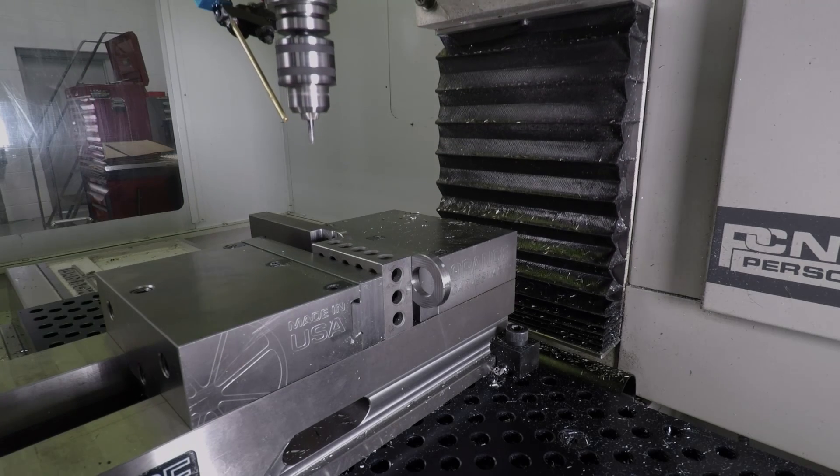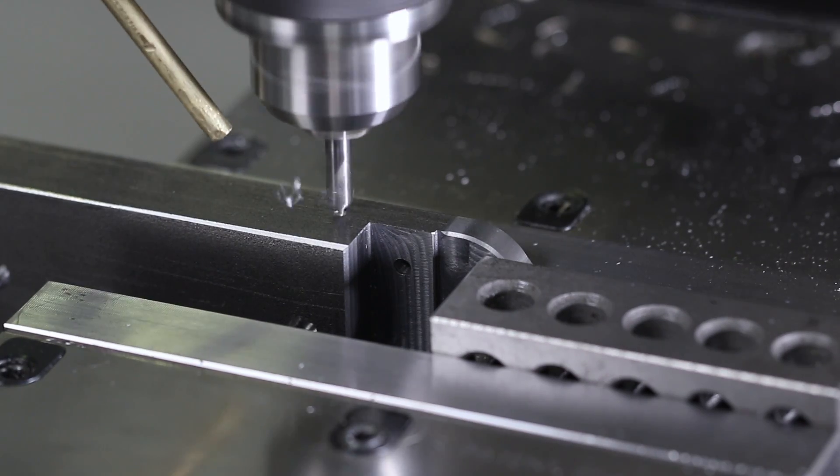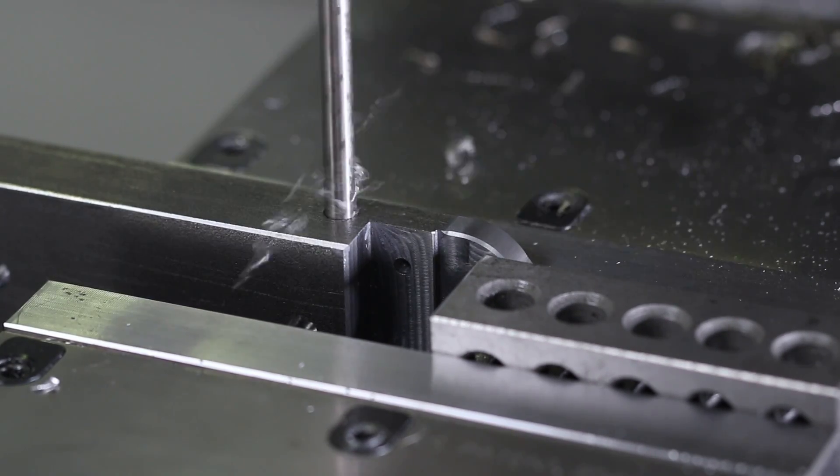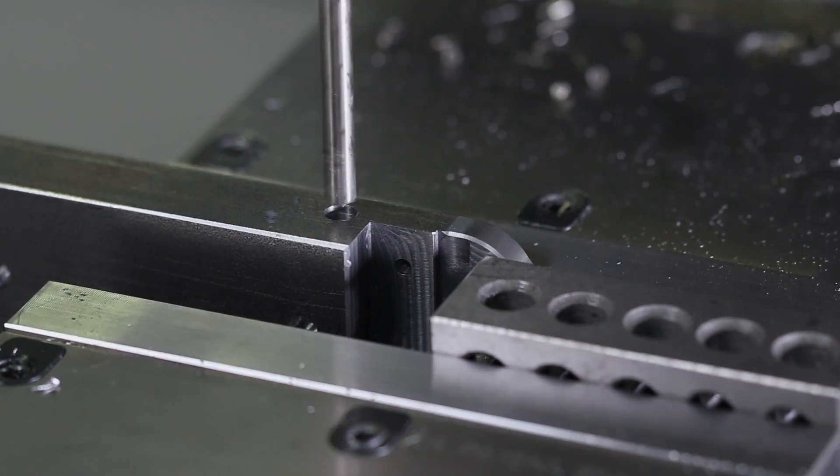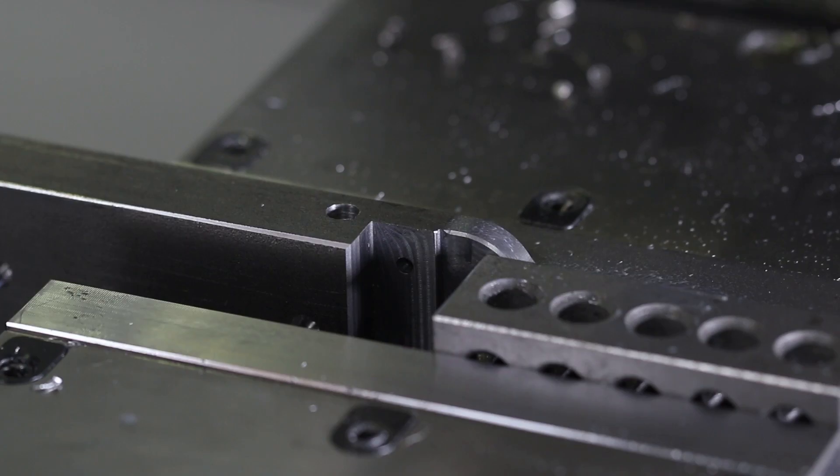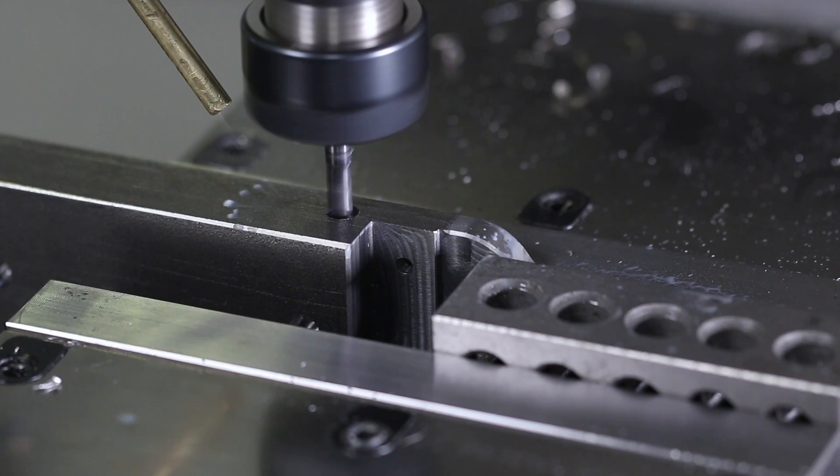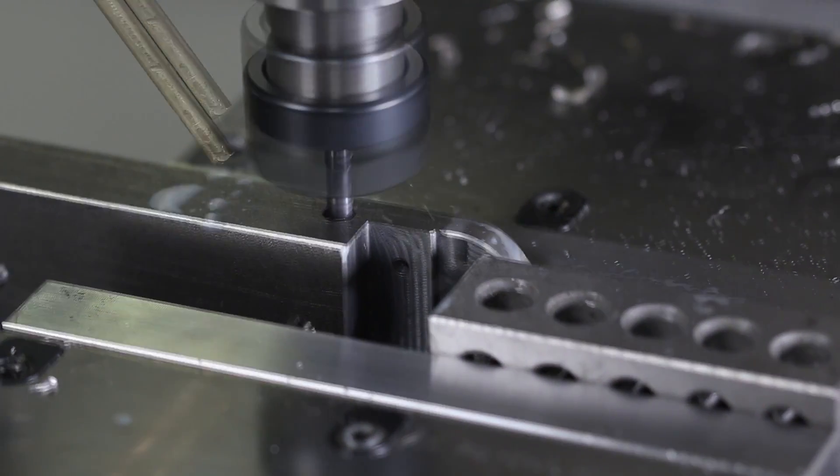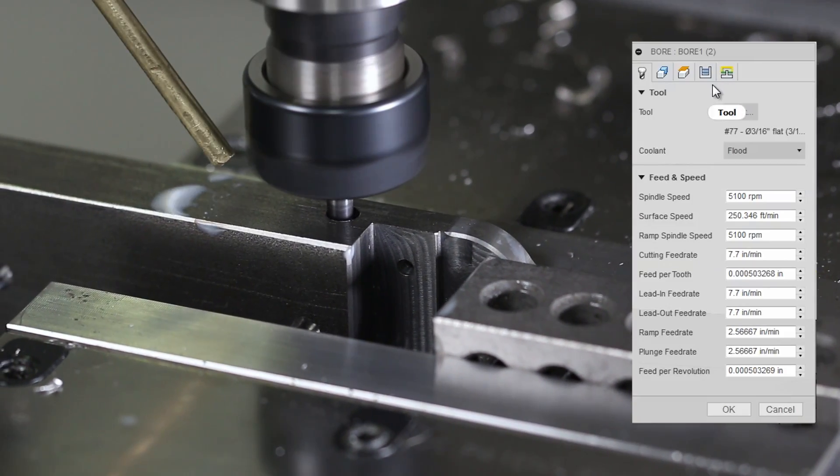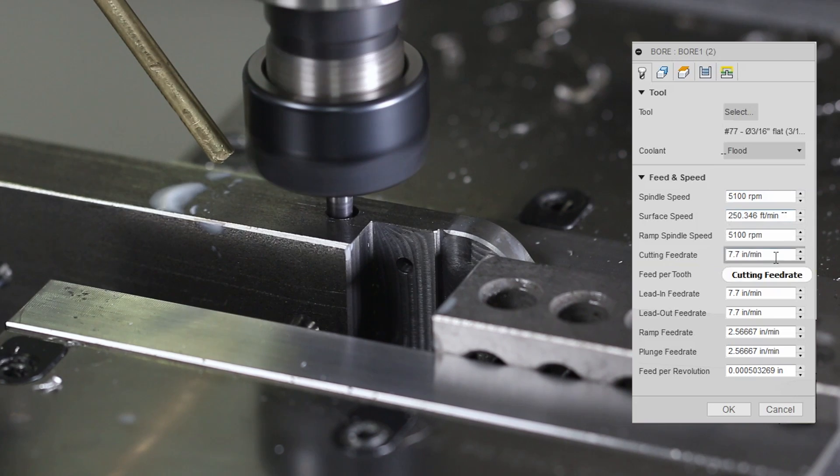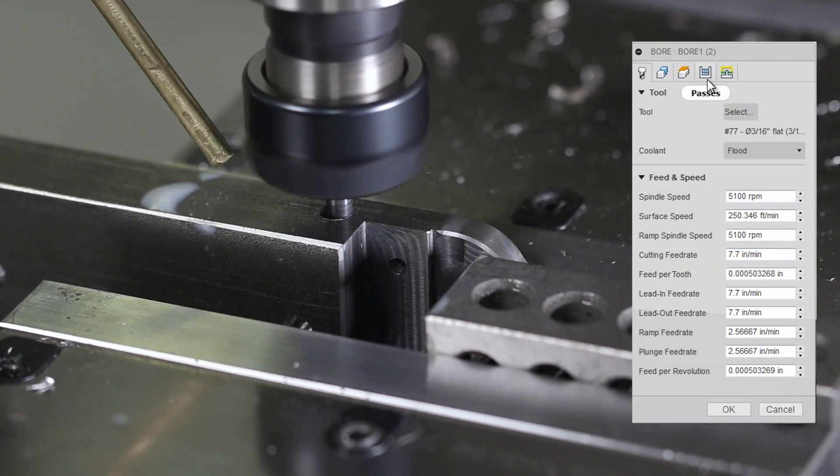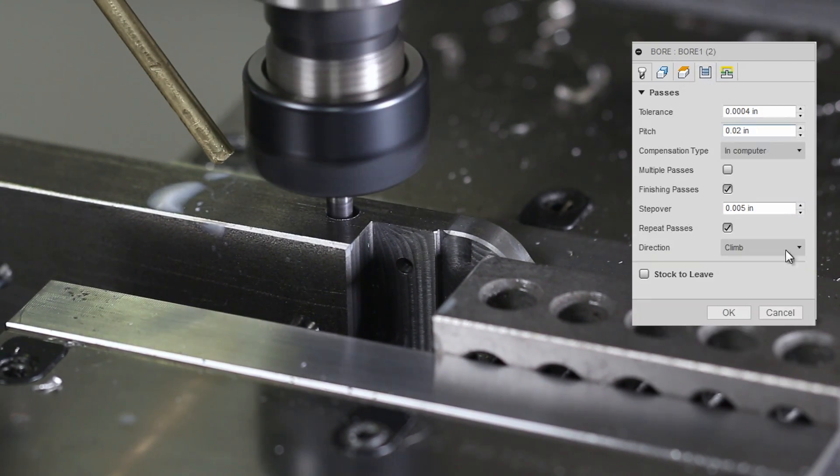And the side holes for the link bar. Using the 1-2-3 block to clamp, plenty rigid enough. Drilling it to letter B or 236. Opening it up with a 3/16 end mill using the boring operation at 250 surface feet. Pretty slow. 7.7 inches per minute and going down at a .02 pitch.